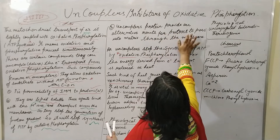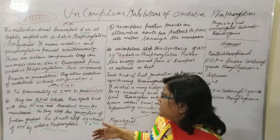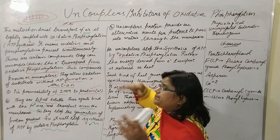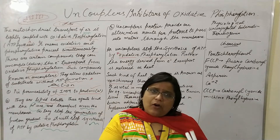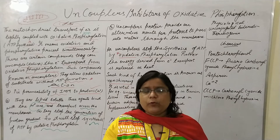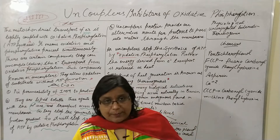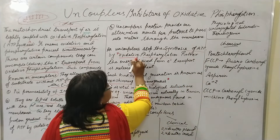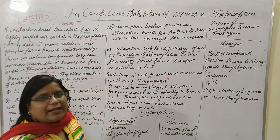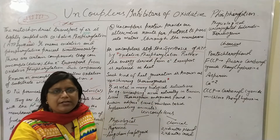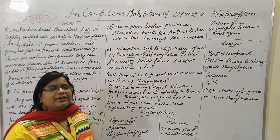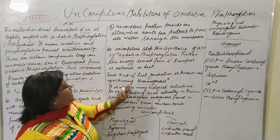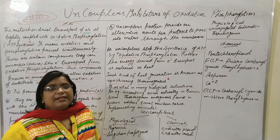Uncoupler proteins provide an alternative route for protons to pass into the matrix through the membrane. Uncouplers can act by changing the permeability or by embedding into the membrane and changing the pathway — they provide protons with alternative routes so that the proton gradient gets disturbed. The uncouplers stop the synthesis of ATP by oxidative phosphorylation. That is why they are also known as inhibitors of oxidative phosphorylation. Some are considered inhibitors of oxidative phosphorylation, and uncouplers are the same. The energy derived from the electron transport chain is released as heat.